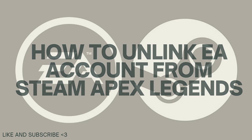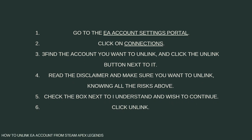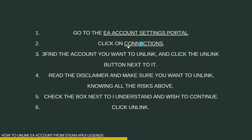So these are the steps you need to follow in order to unlink your EA account from Steam Apex Legends. First, go to the EA account settings portal, then click on the Connections button, find the account you want to unlink, and click the Unlink button next to it. Read the disclaimer and make sure you want to unlink, knowing all the risks stated.